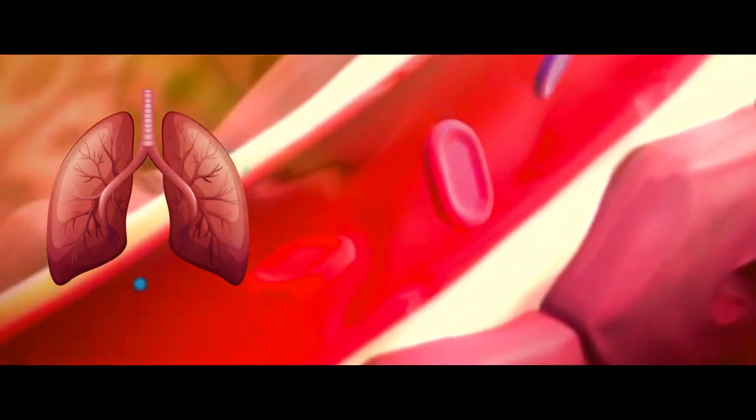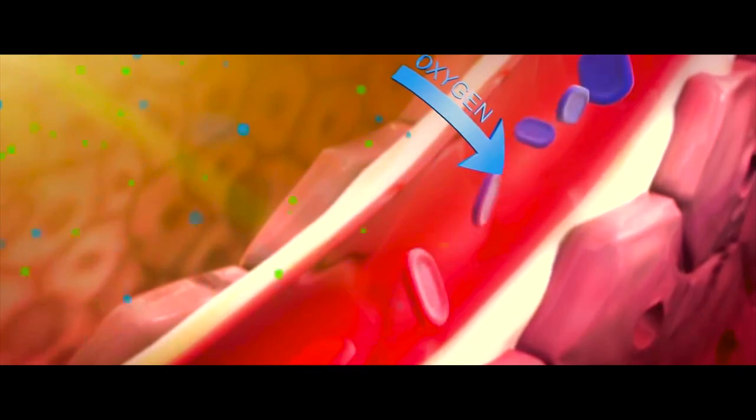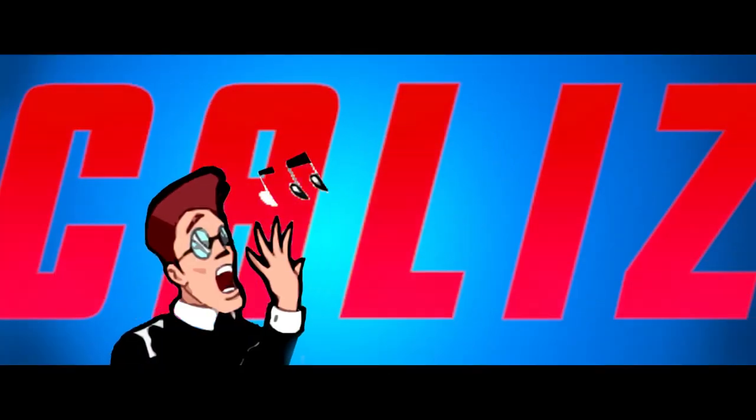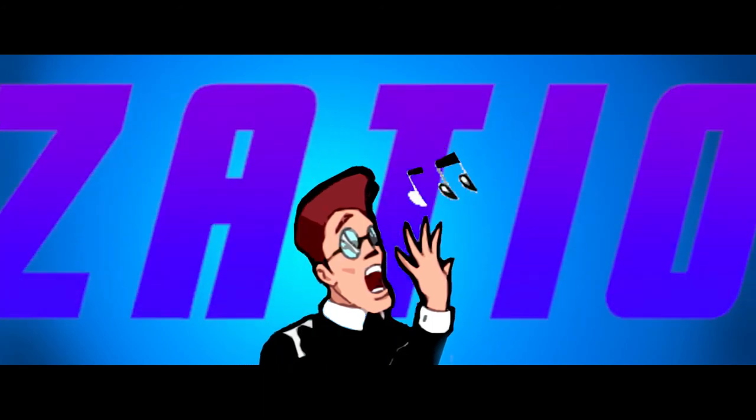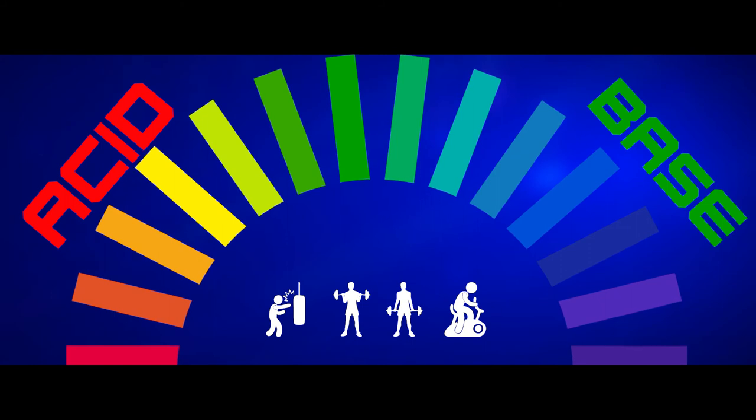The respiratory system provides a means to replace oxygen and remove carbon dioxide from the blood. It also makes vocalization possible and plays an important role in the regulation of acid-base balance during exercise.